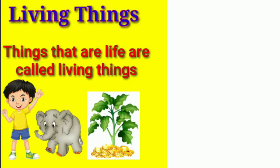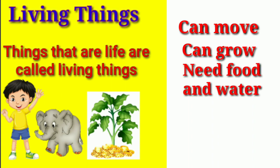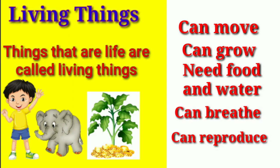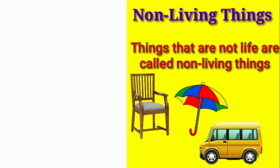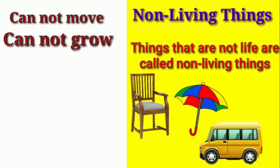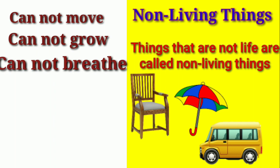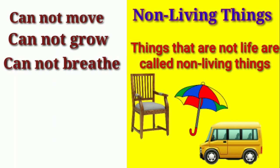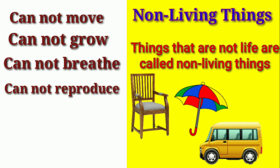Living things can move, can grow, they need food and water, can breathe, and can reproduce. While non-living things cannot move, cannot grow, cannot breathe, cannot reproduce, and do not need food and water.